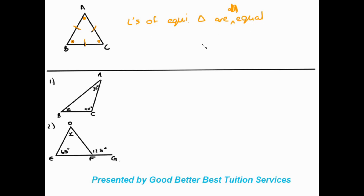Now that we've gone over the properties of our triangles, we can move on to some examples. When dealing with triangle geometry, just like with straight line geometry, we're going to give a statement and we're going to give a reason.